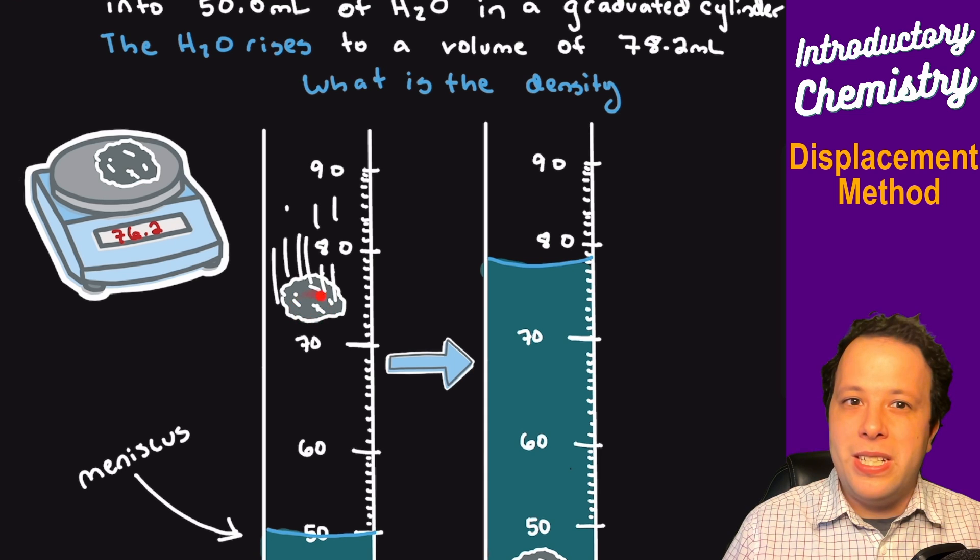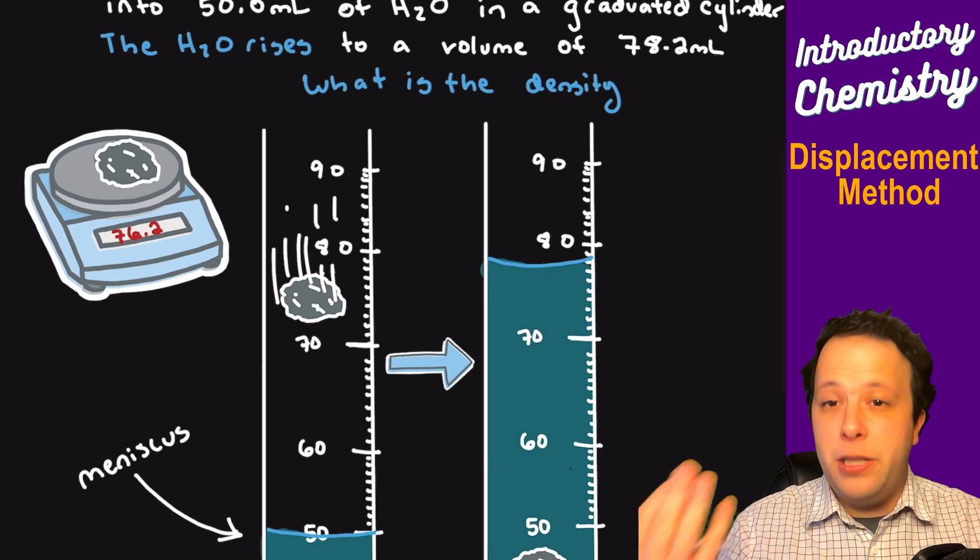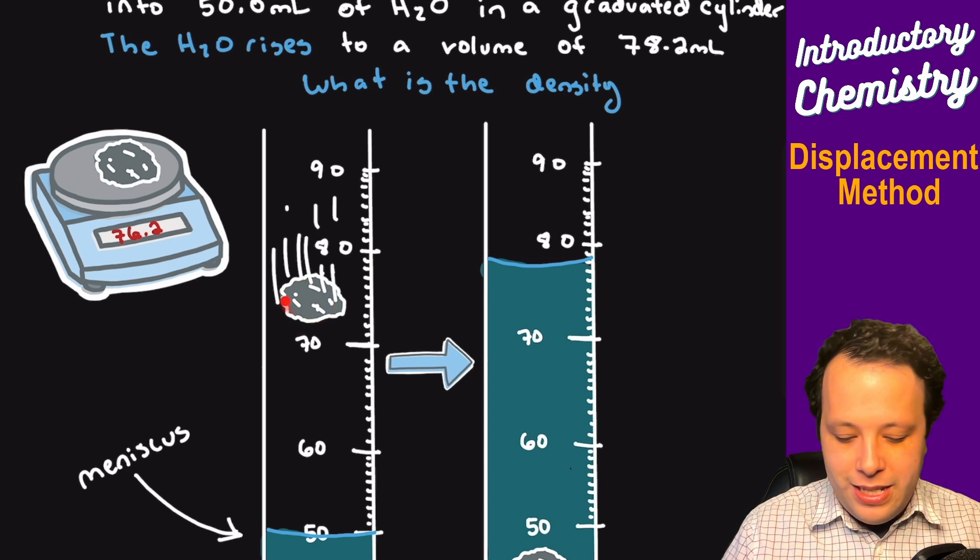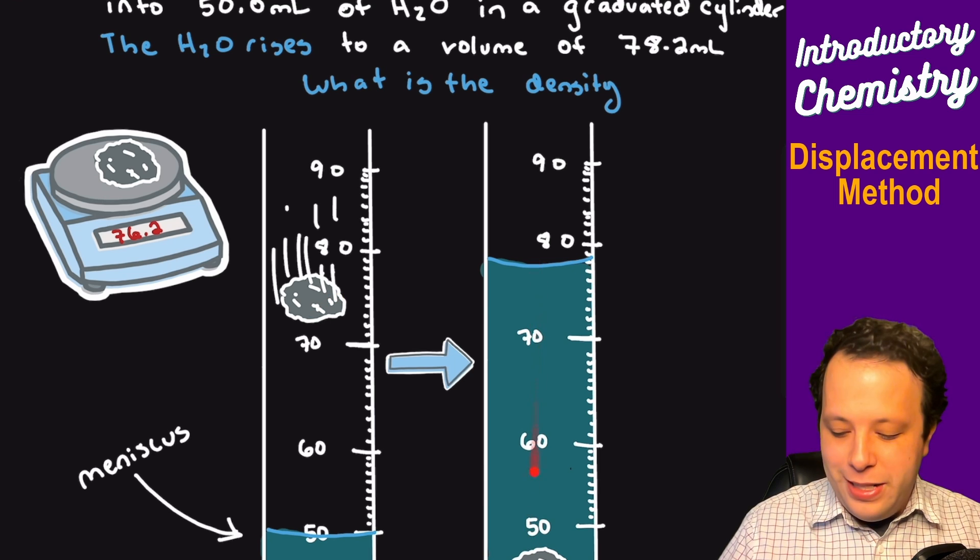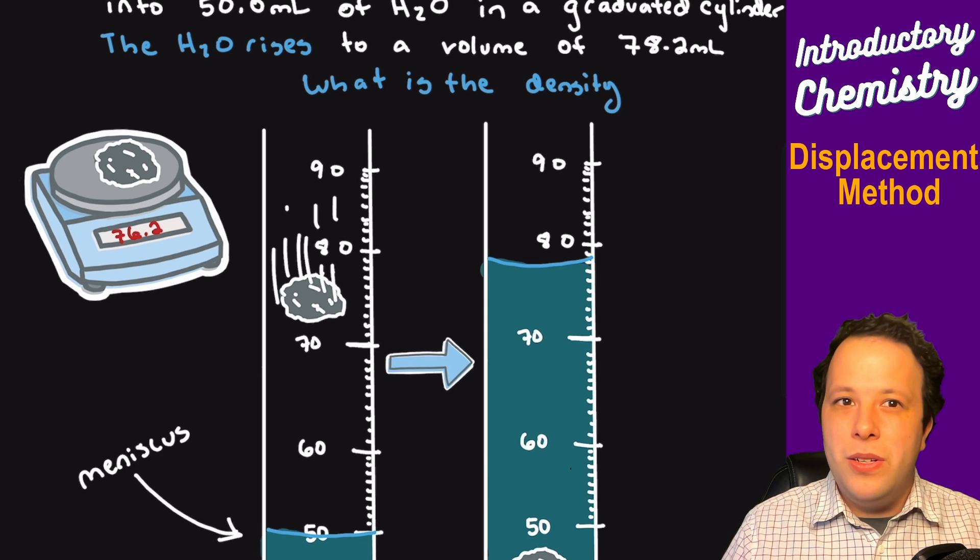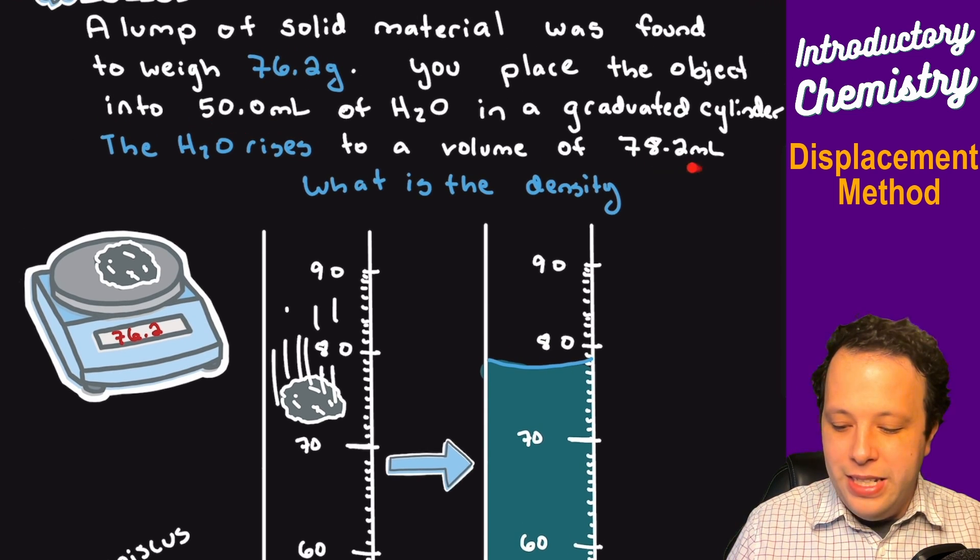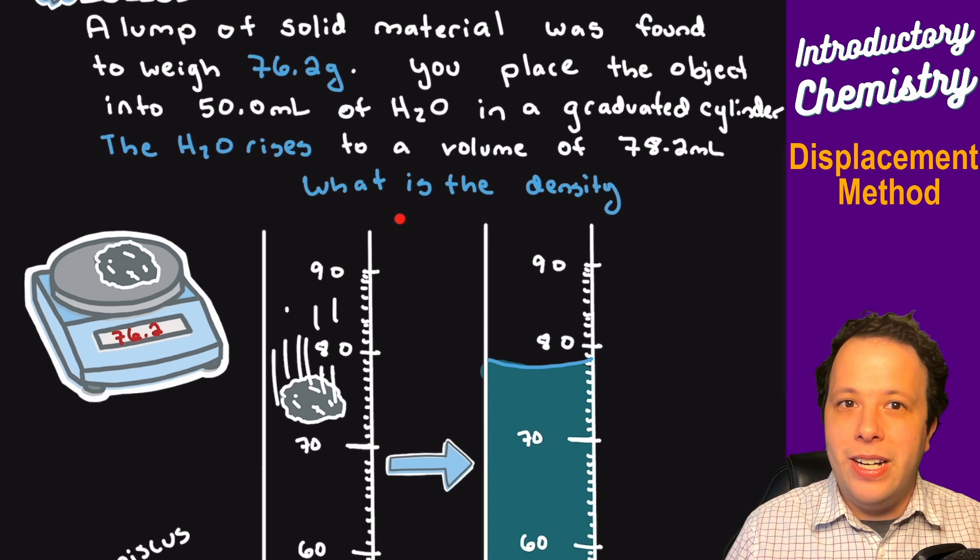Now I'm going to slowly drop my lump into the grad cylinder, and when it sank to the bottom I saw that all of the liquid was displaced. It was moved. Why? Well that is because this object has so much volume to it that it's going to displace all of the liquid. So when that happened, we originally had 50 mL, it displaced it to 78.2. So let's see if we can find the density.